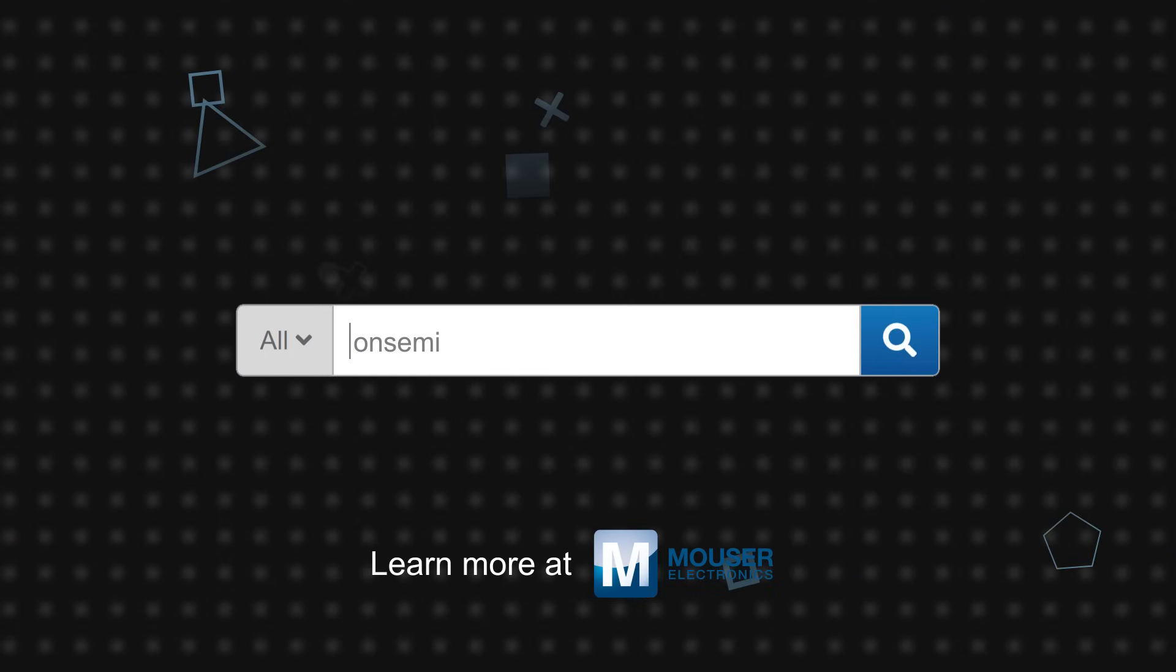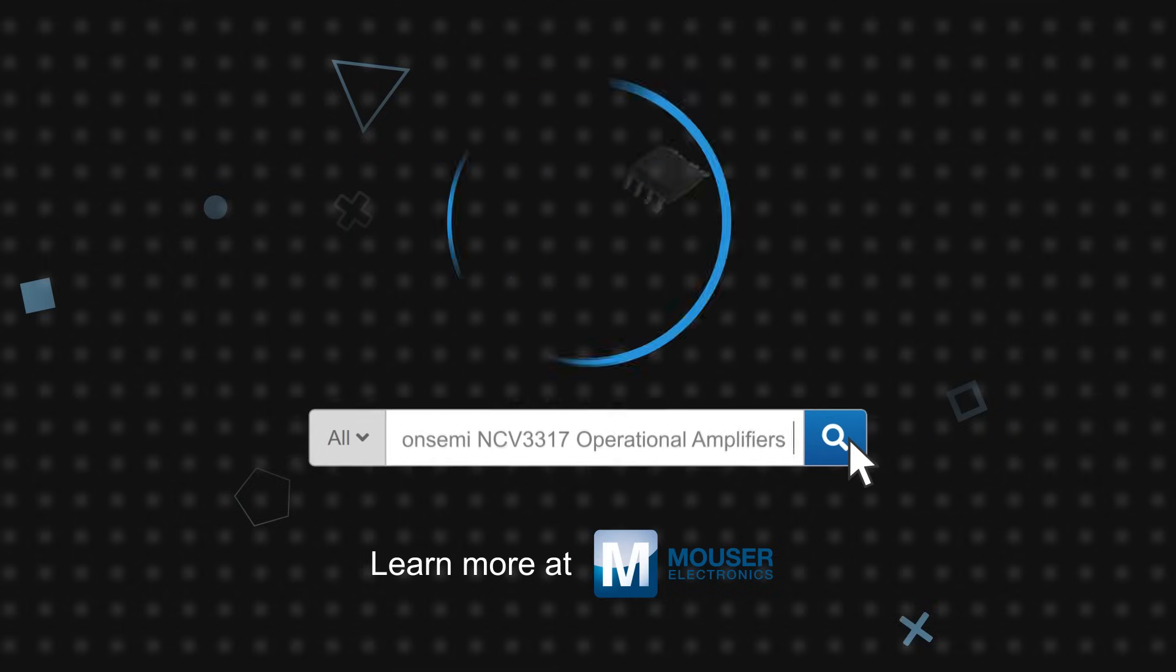OnSemi NCV3317 operational amplifiers are available now on Mauser.com.